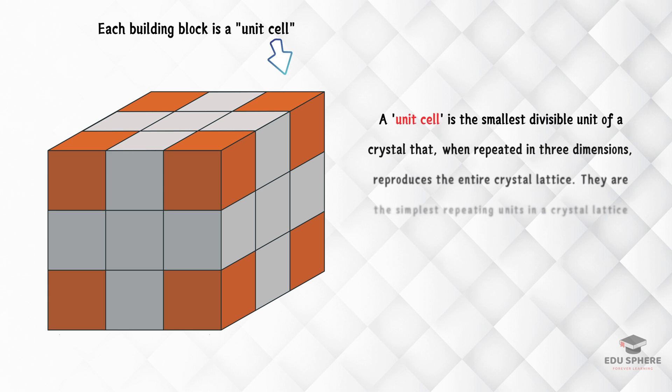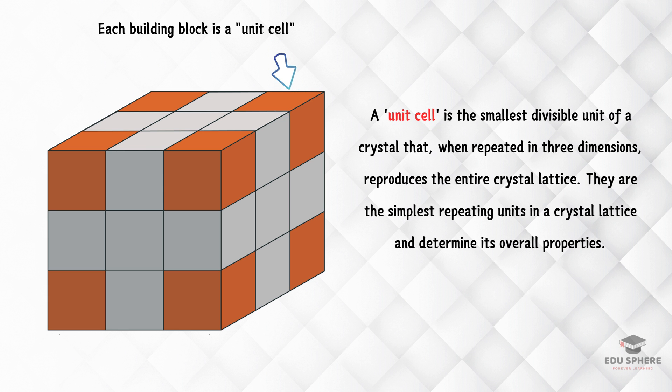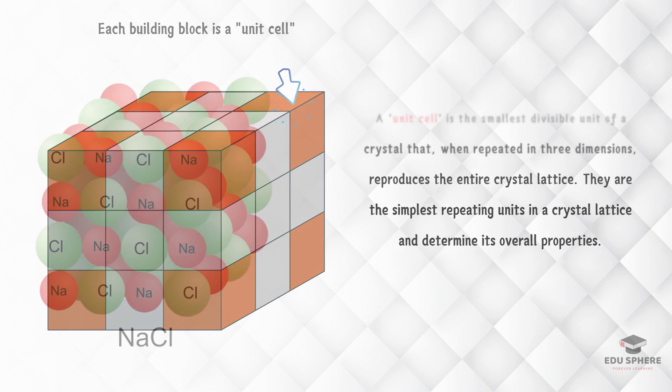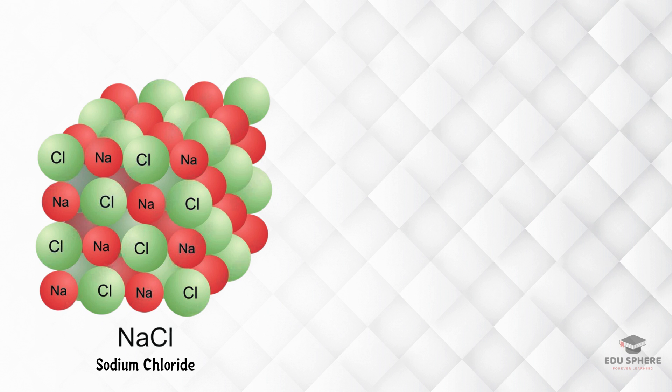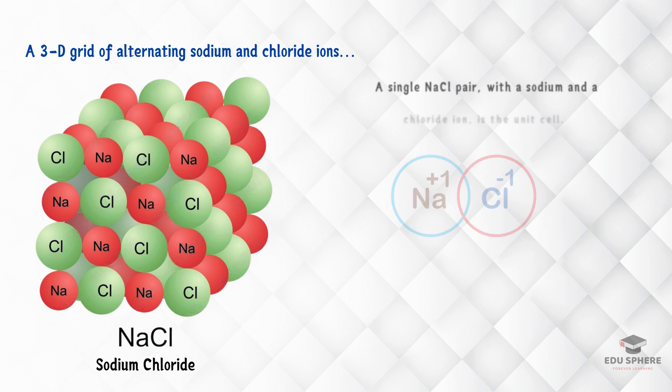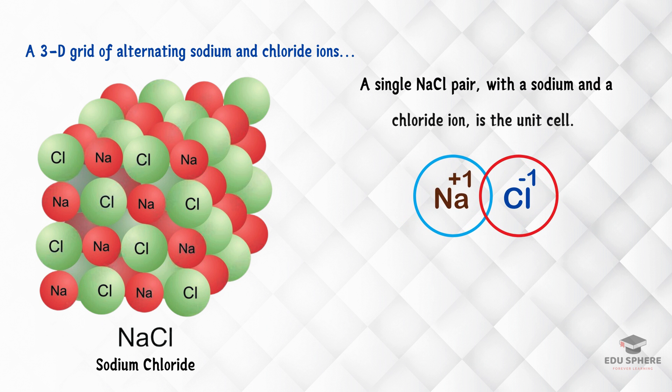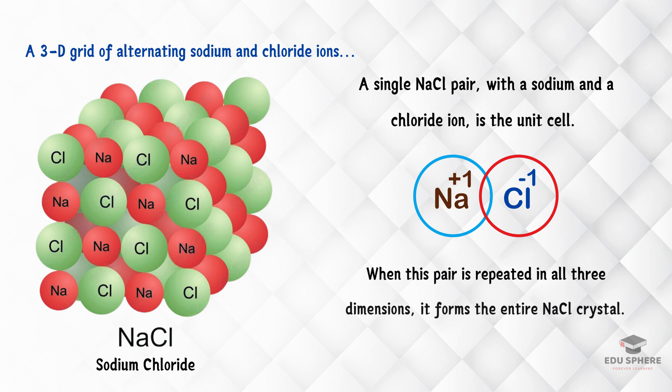You can check out the definition of a unit cell mentioned here. Consider the example of a salt crystal. As you can see in this figure, the structure of a sodium chloride crystal can be represented as a 3D grid of alternating sodium and chloride ions. A single sodium chloride pair is the unit cell. When this pair is repeated in all three dimensions, it forms the entire sodium chloride crystal.